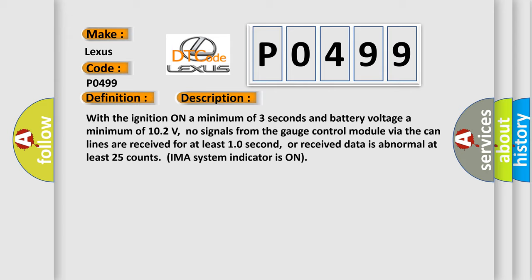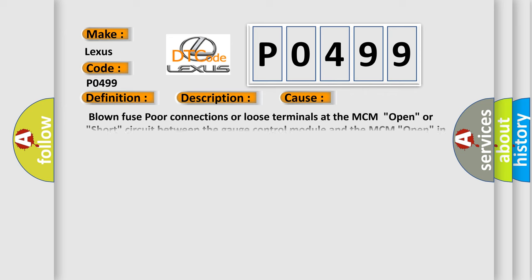This diagnostic error occurs most often in these cases: blown fuse, poor connections or loose terminals at the MCM, open or short circuit between the gauge control module and the MCM, open in the ground wire, or faulty gauge control module.